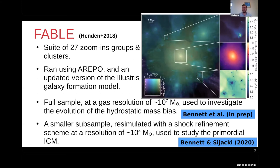There's a smaller subsample that we've re-simulated with a new shock refinement scheme which boosts resolution to about 10^4 solar masses, which we use to study the circumgalactic medium of massive high-redshift galaxies, which is effectively the primordial intercluster medium.